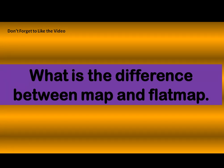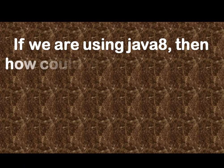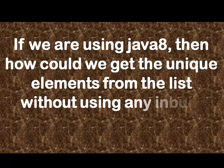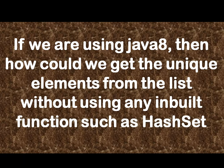The next question was related to Java 8 coding: how can we get the unique elements from a list without using any inbuilt functions such as HashSet? As part of our Java 8 coding question series, the answer is — we can use the distinct() method. With the help of that method, we can get the distinct elements out of the stream.